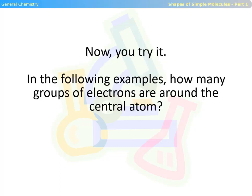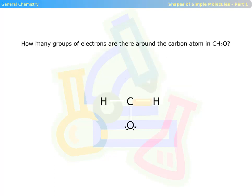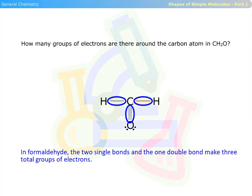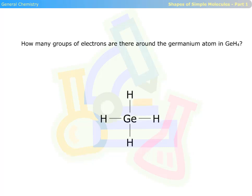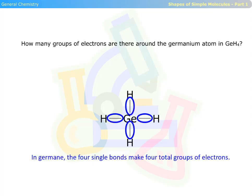Now you try it. In the following examples, how many groups of electrons are around the central atom? In formaldehyde, the two single bonds and the one double bond make three total groups of electrons. In germane, the four single bonds make four total groups of electrons.